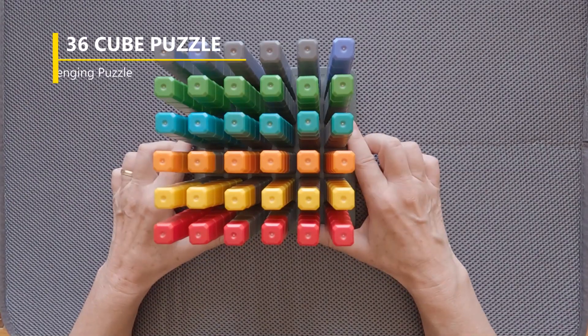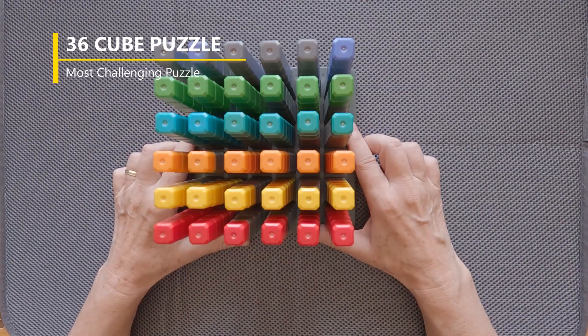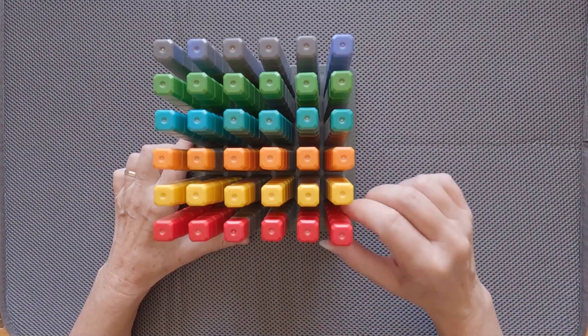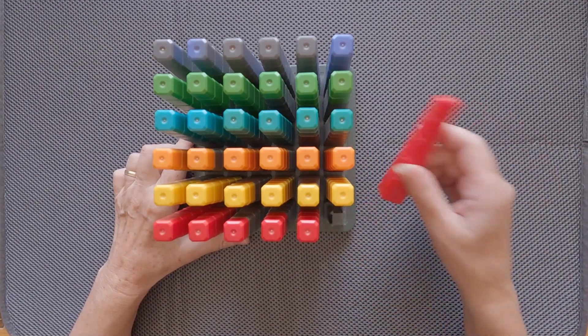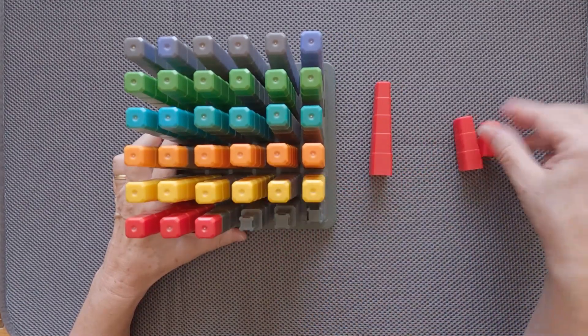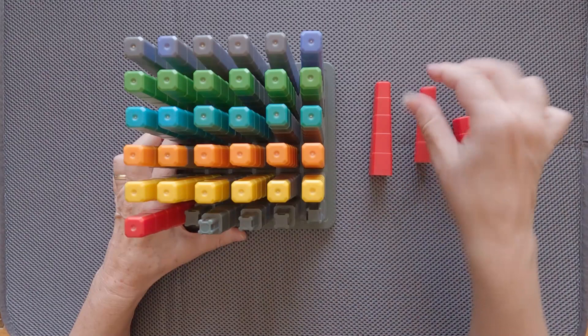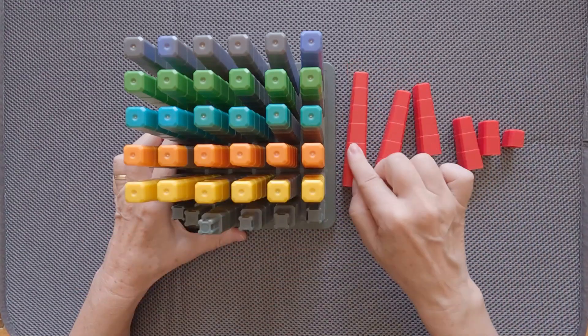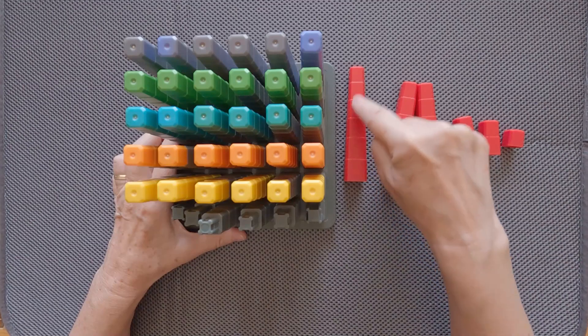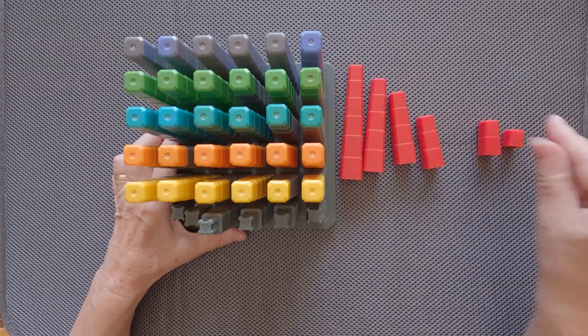The 36 cube puzzle is one of the most challenging puzzles. We have 36 color elements that we call towers, also of different heights. I'm going to show you. The tallest height is six, easy to understand: one, two, three, four, five, six, five, four, three, two, one.